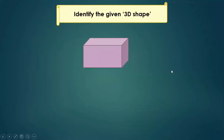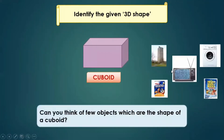Identify this shape — yes, it is a cuboid. Think of shapes like buildings, skyscrapers, your television, the washing machine, the books. All of these have the shape of a cuboid.